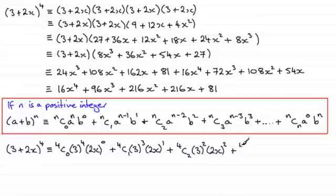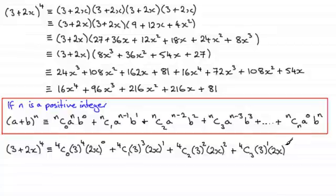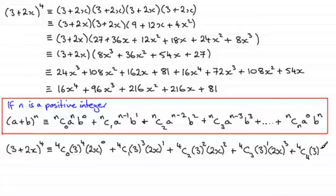Next term: 4C3; reduce the power on the 3 to 3 to the power 1; increase the power on the 2x to (2x) to the power 3. All the time these powers are adding up to 4. And the last term is 4C4, then 3 to the power 0, and (2x) all to the power 4.